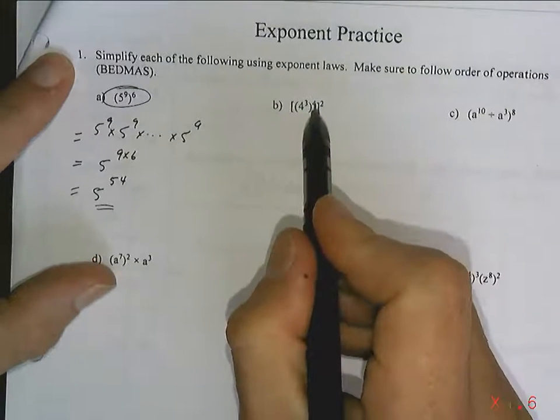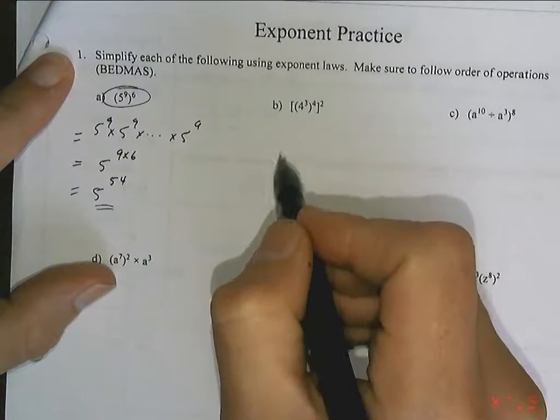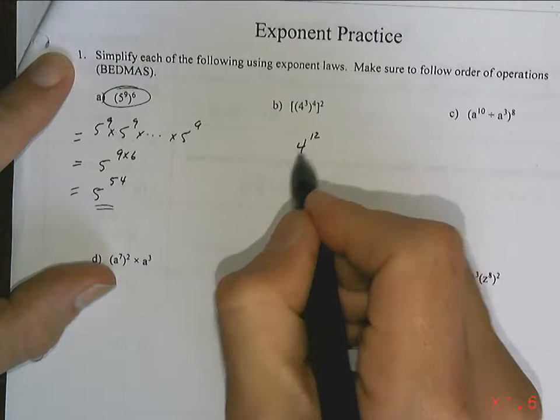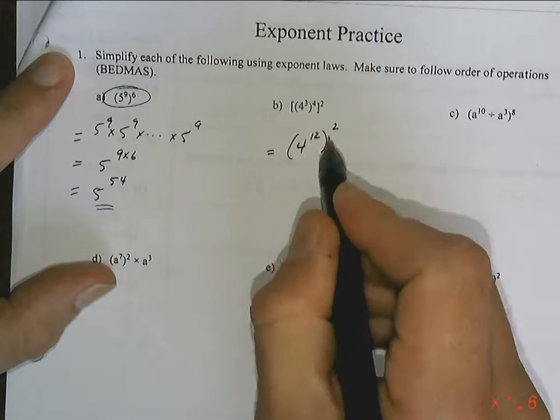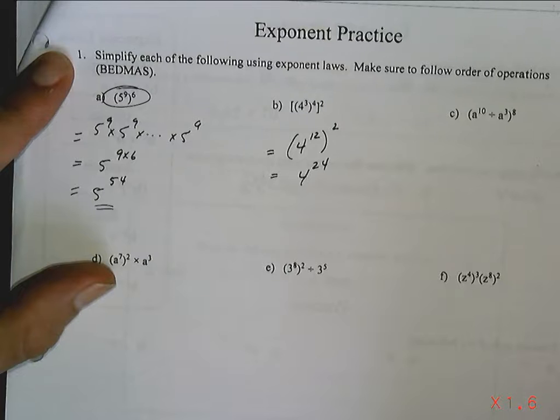4 to the 3 to the 4 to the 2. Well, I'm going to go slow. I know that 4 to the 3 to the 4 means 4 to the 12. And then 4 to the 12 to the 2 means 4 to the 24. And that would be my answer for that one.